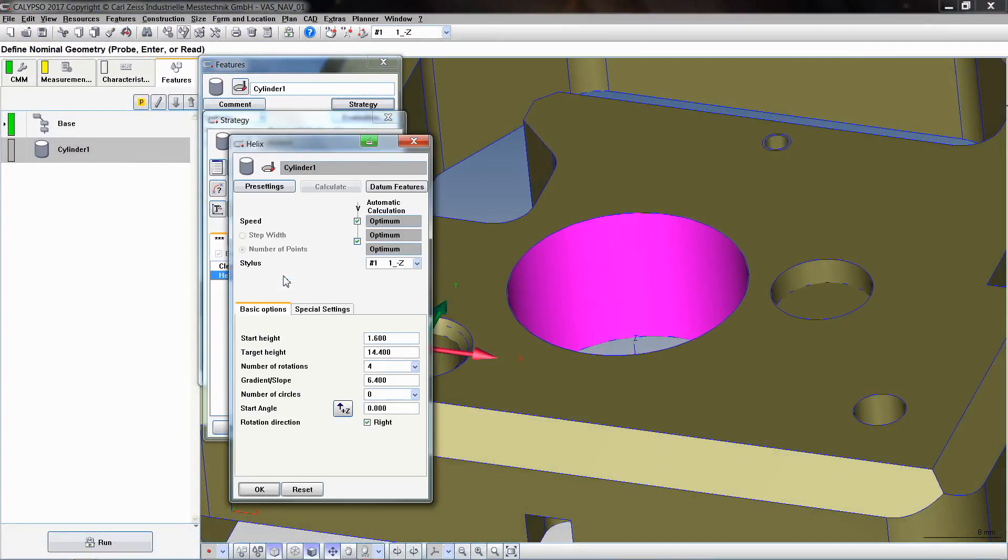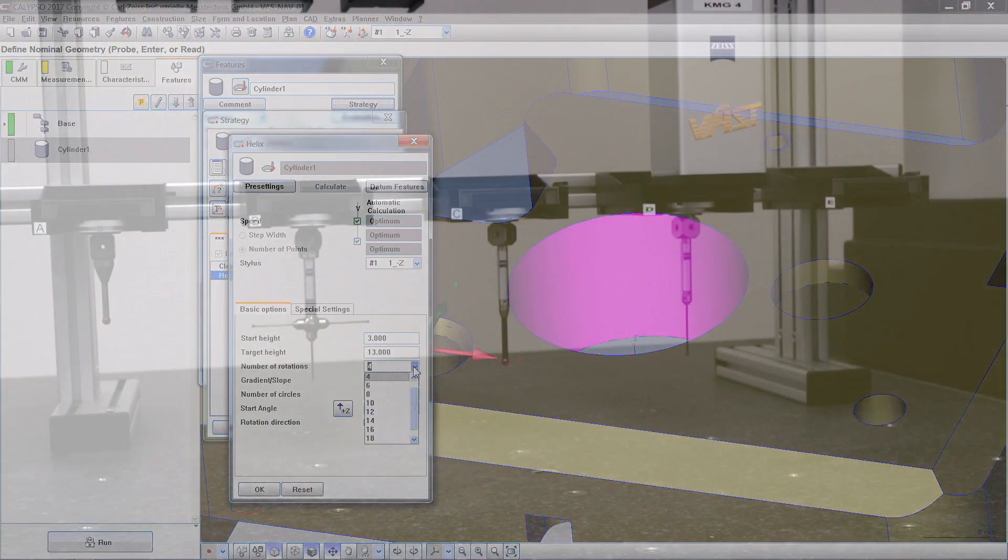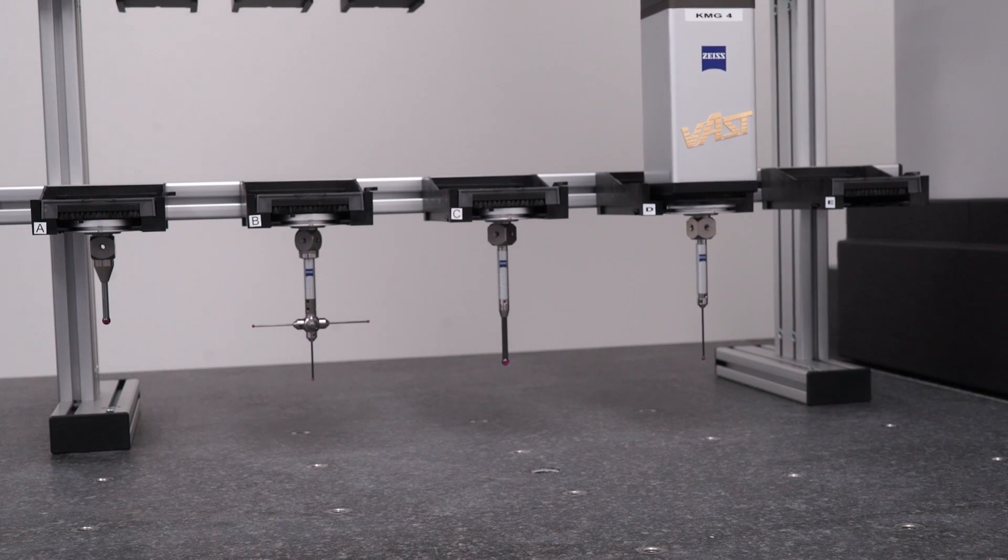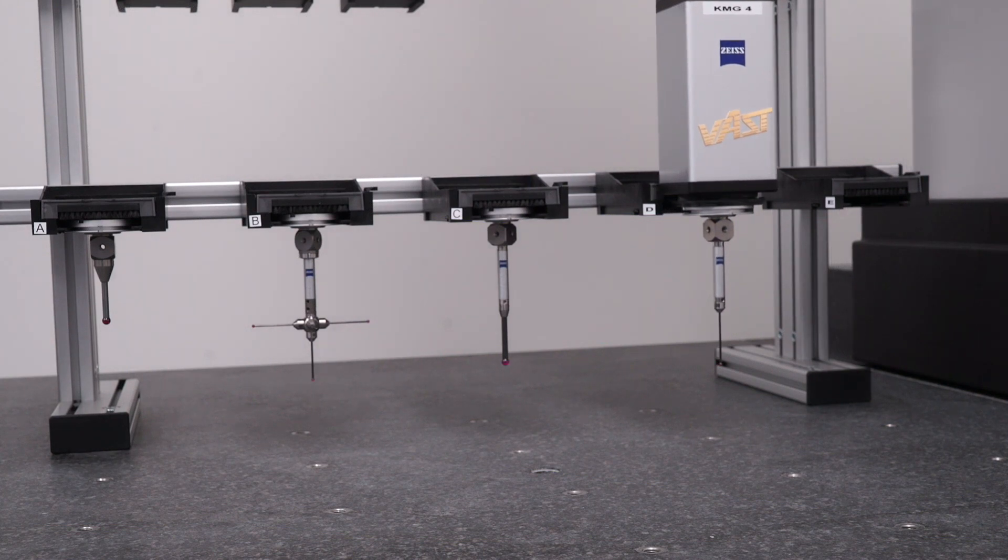Afterwards, we will discuss tangential probing and VAST helix scanning. The final chapters deal with fly scanning and quick stylus system changeout. This will enable you to use all these functions on your own following this course.